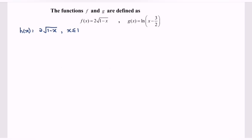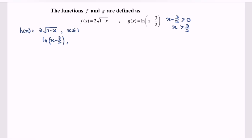Next, for the function g(x), which is ln of bracket x minus 3 over 2, the domain condition comes from the ln function: x minus 3 over 2 must be greater than 0. So x must be greater than 3 over 2. Therefore, the domain for the function g will be x greater than 3 over 2.